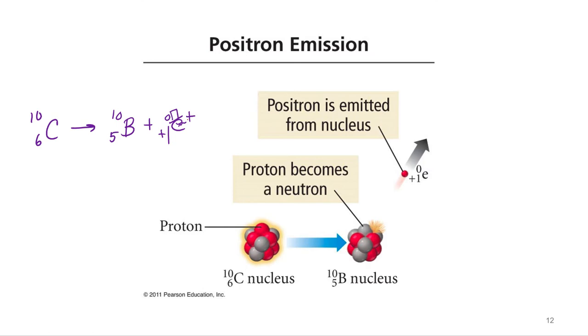So we'll do some more examples, but usually what we're going to do is either predict what particle is being emitted. So if you know carbon-10 becomes boron-10, the atomic number went down by 1, it has to be a positron, a plus 1. Or if you could alternatively say, carbon-10 undergoes positron emission, what's the daughter isotope being produced? And you can figure it out just by the difference.